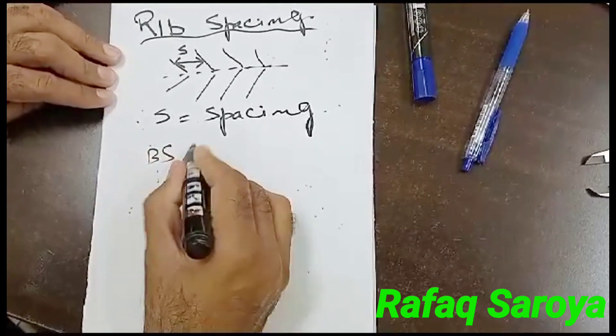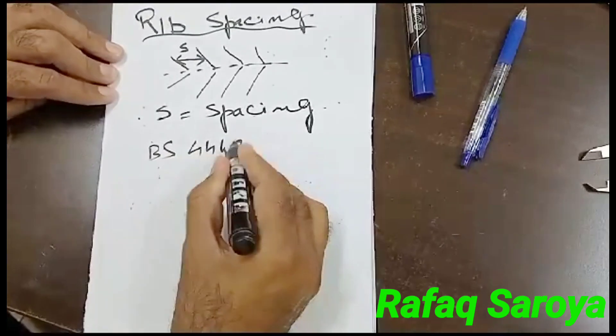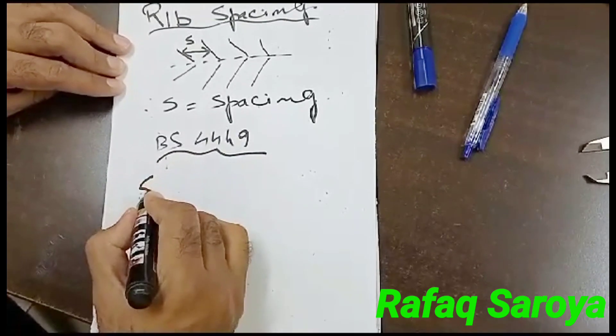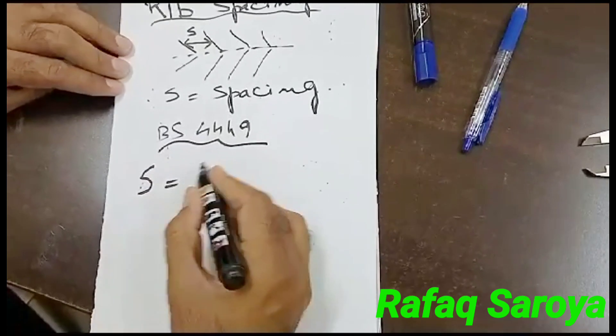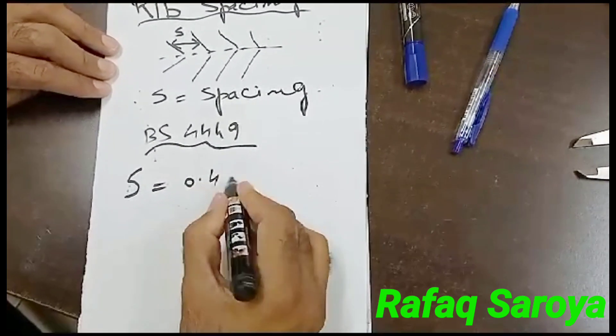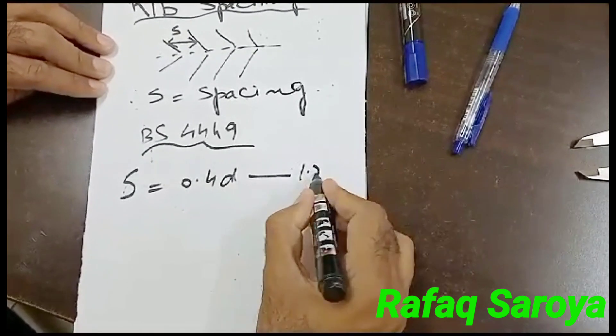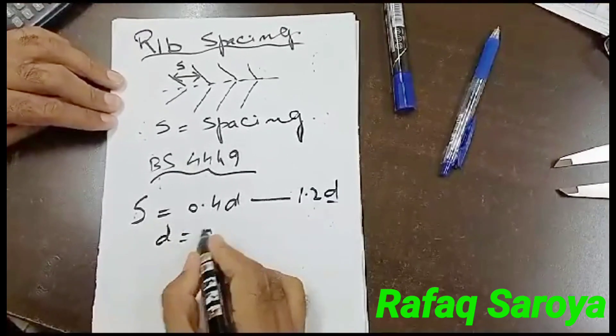And as per BS 3449, the value of the rib spacing can be found out by this equation: 0.4D up to 1.2D, where D is the diameter of the bar.